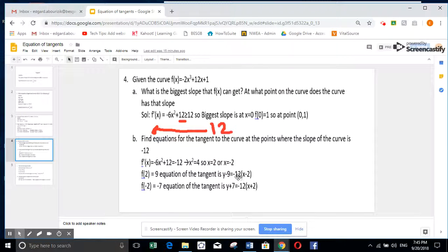And the slope is minus 12. So the slope here is minus 12. For the first one and the second one, I have the point 2, 9 here. And here the point minus 2, minus 7. So I have the equation.